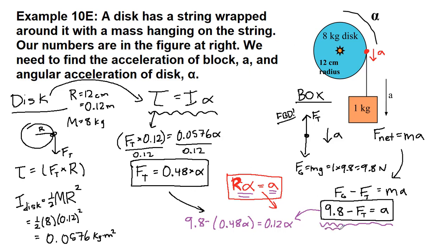So, we can add 0.48 alpha to both sides, so we get 9.8 equals 0.60 alpha. We can divide by 0.60.